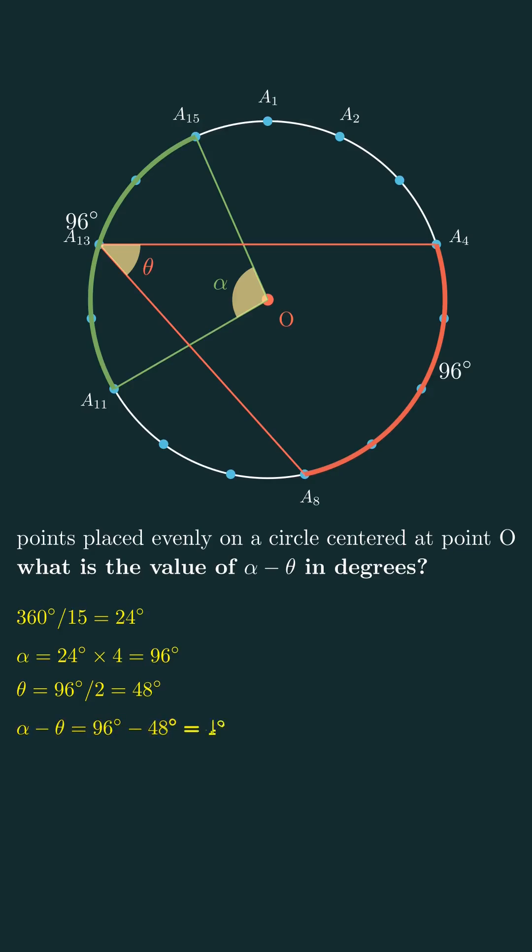And finally, alpha minus theta is 96 minus 48 equals 48 degrees. That's the answer. Don't forget to follow for more fun math and geometry videos.